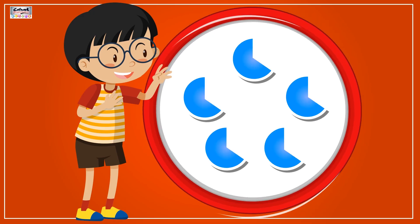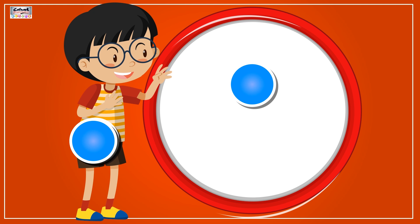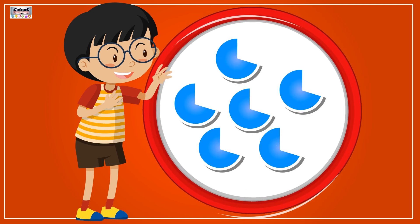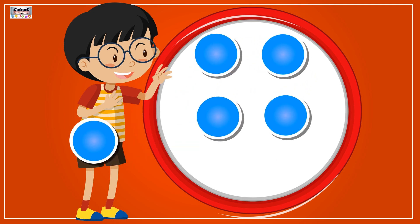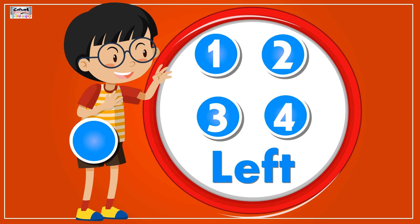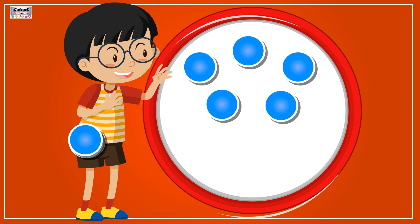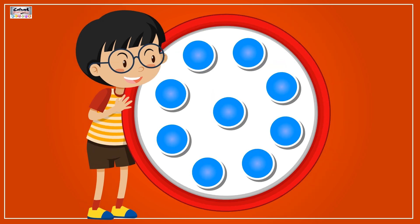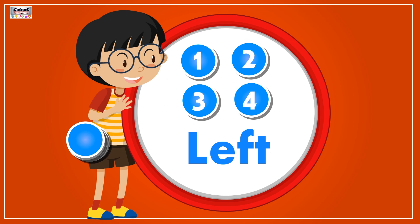Out of 5 circles, if 4 are taken away, then only 1 is left. Out of 6 circles, if 2 are taken away, then only 4 are left. Out of 8 circles, if 3 are taken away, then only 5 are left. Out of 9 circles, if 5 are taken away, then only 4 are left.